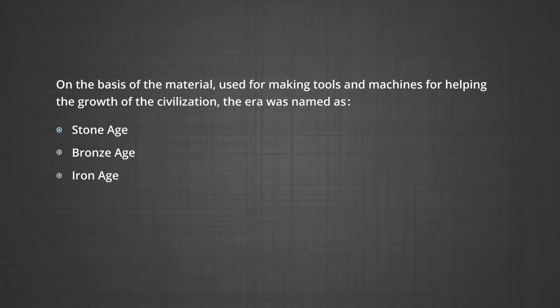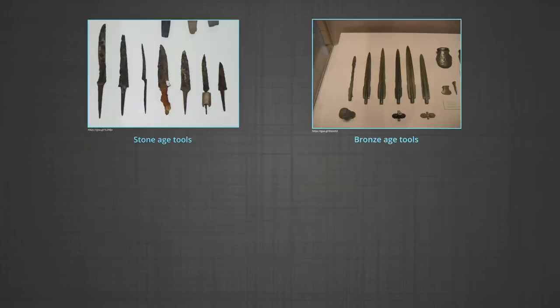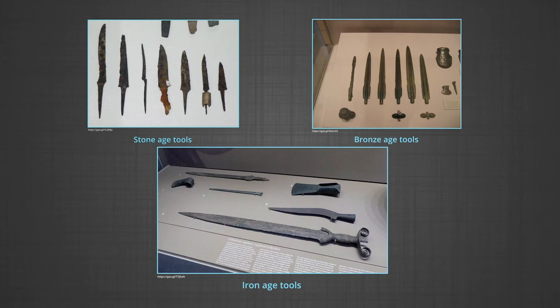You must have studied in your history classes about the evolution of human civilization. On the basis of the material used for making tools and machines for helping the growth of civilization, the era was named as Stone Age, Bronze Age, Iron Age, etc. Thus, the development of human civilization passed from the Stone Age to Bronze, then to Iron and now to a modern developed society, a society that is dependent on metals and alloys for its very existence.